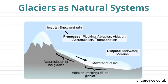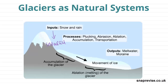Snow and ice are our inputs in our glacial system, and these can reach the system through snowfall or avalanches. These inputs can also be known as accumulation, as noted here, and this is an important word that we are going to look at in more detail.